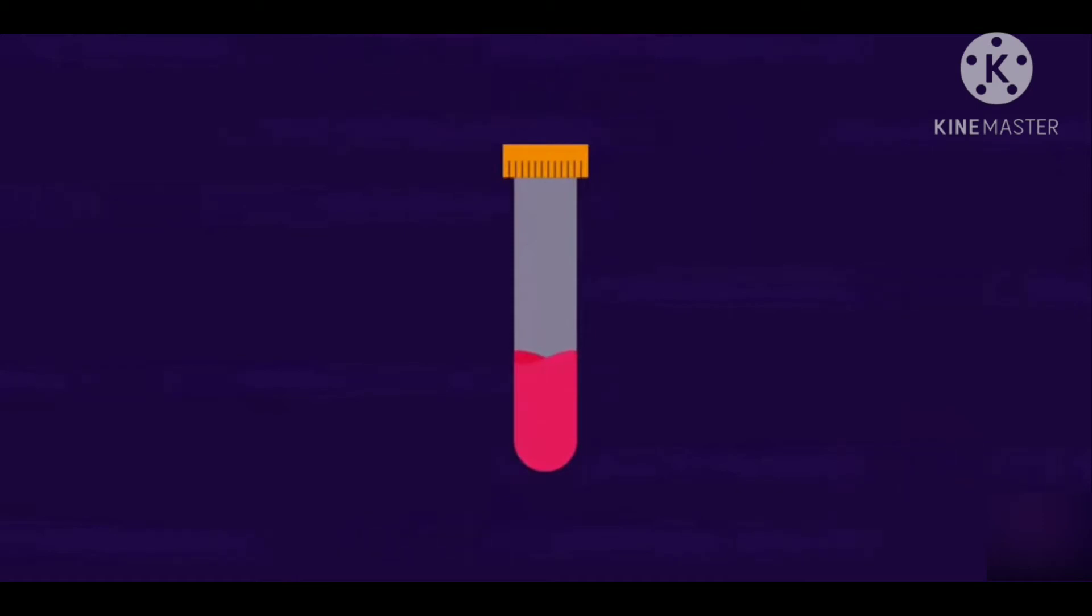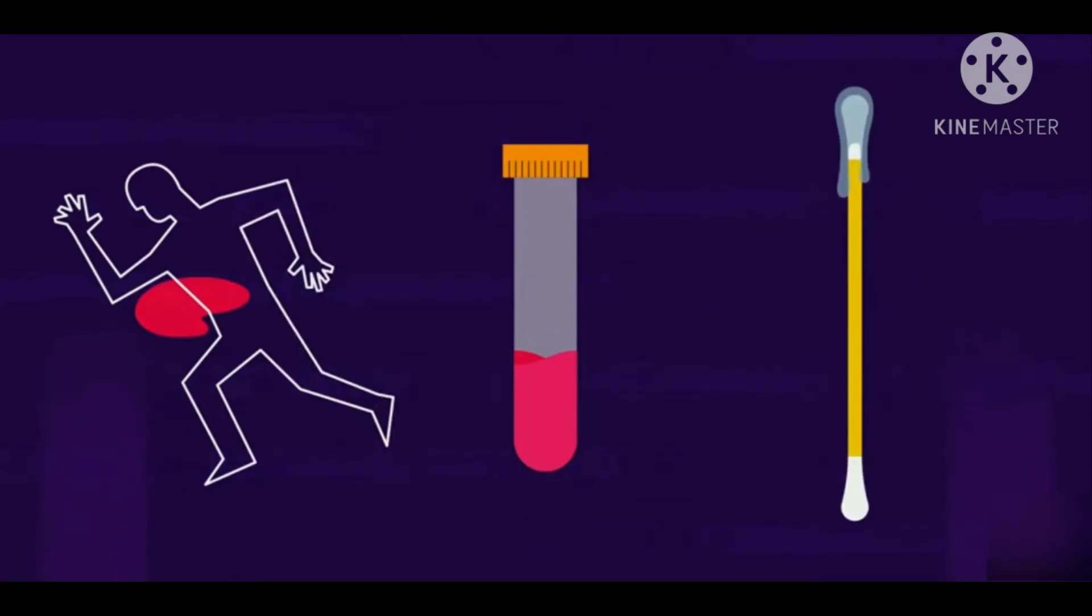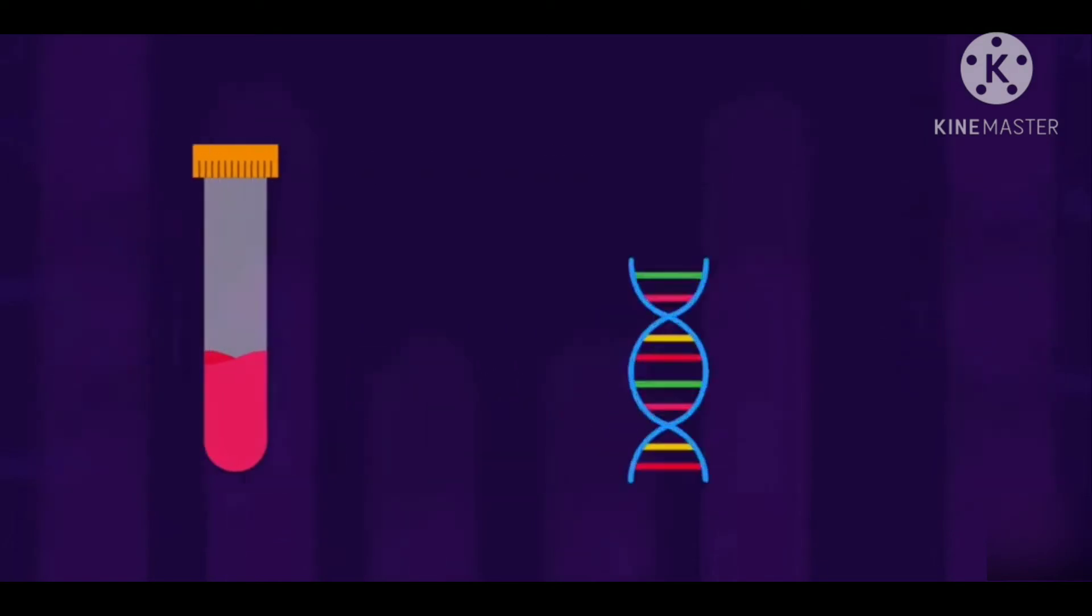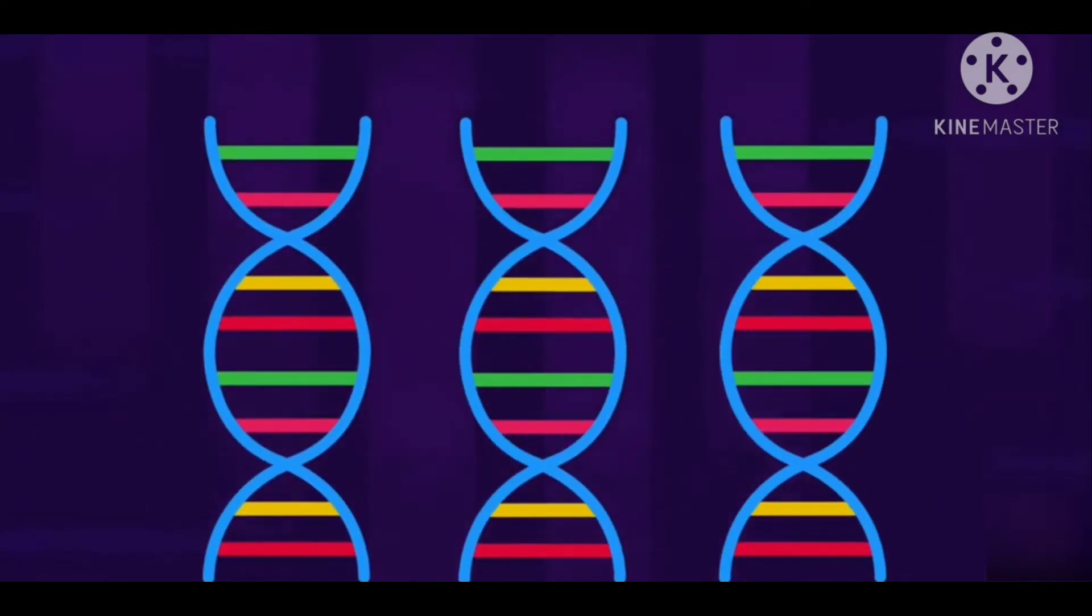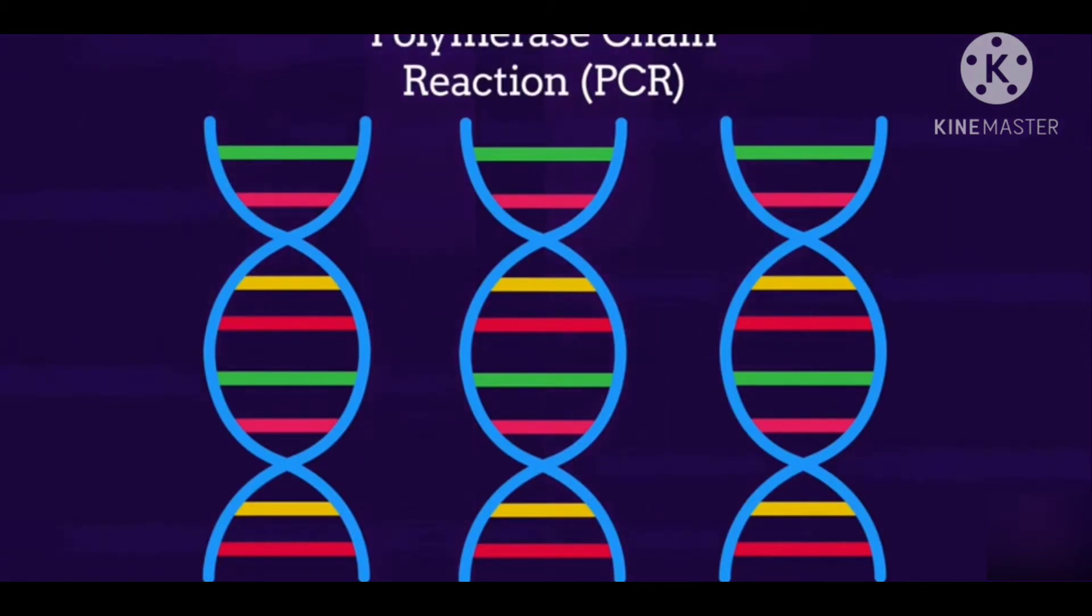A cell sample is collected, this could be from some blood at a crime scene or a swab from the inside of someone's cheek for example. The DNA is then extracted from the sample. Many copies of this DNA may be made using the polymerase chain reaction or PCR.